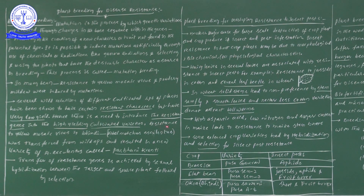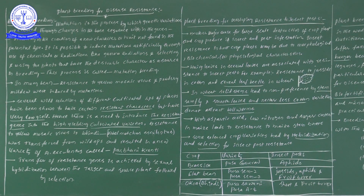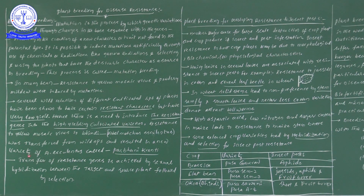This is also one kind of method. For example, resistance to yellow mosaic virus in bhindi — Abelmoschus esculentus, also called lady's finger. This bhindi is showing resistance to yellow mosaic virus. This particular resistance was transferred from the wild species. When resistance to yellow mosaic virus genes were introduced into the bhindi variety, automatically a new variety emerged.